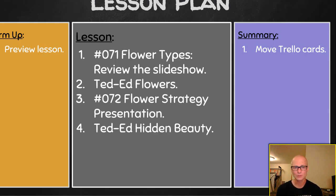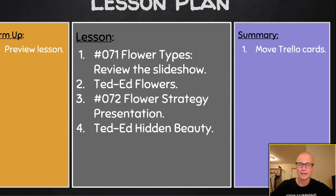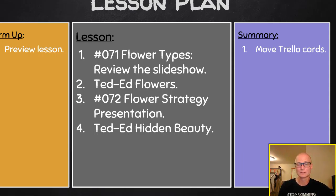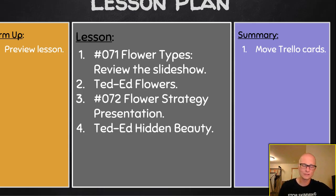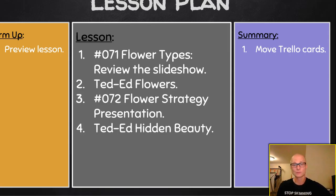Then we'll go on to 072 flower strategy presentation, where we focus more on the different ways that plant adaptations, pollination methods, and seed dispersal methods allow plants to be everywhere in our environment. Then, optional — if you get a chance, watch the TedEd hidden beauty video. It's slow-mo photography, actually a trailer for a full-length movie that shows us things we don't normally see with our eyes.